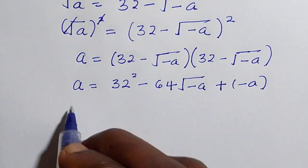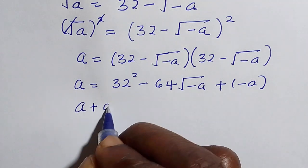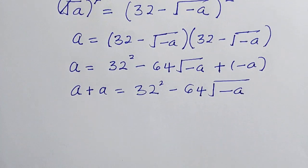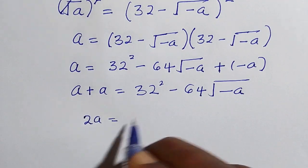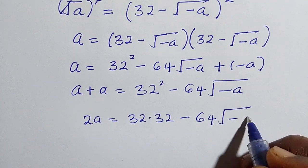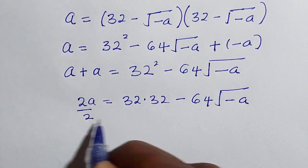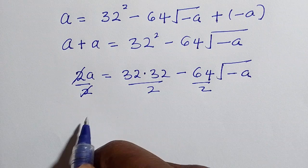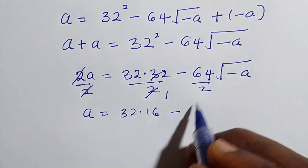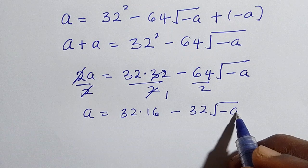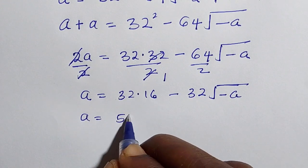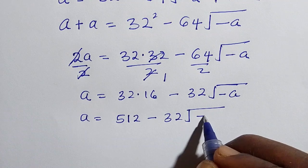Then let's take this a to this side, so we have a plus a equals 32 squared minus 64 root of minus a. Then a plus a gives us 2a equals 32 multiplied by 32 minus 64 root of minus a. Let's divide by 2 to reduce the numbers: a equals 32 multiplied by 16 minus 32 square root of minus a, giving us 512 minus 32 square root of minus a.